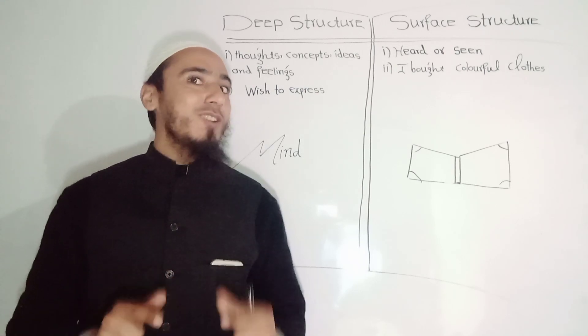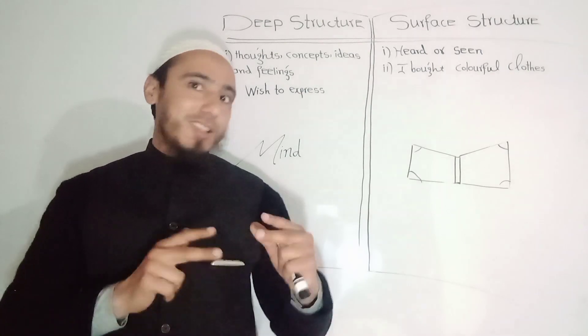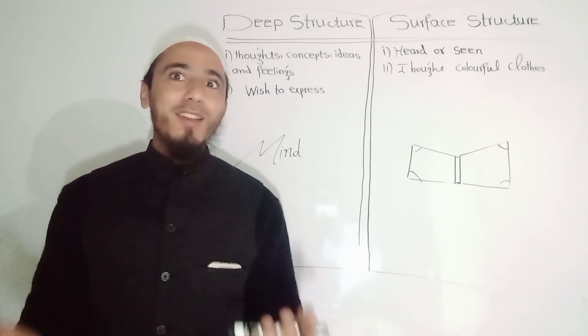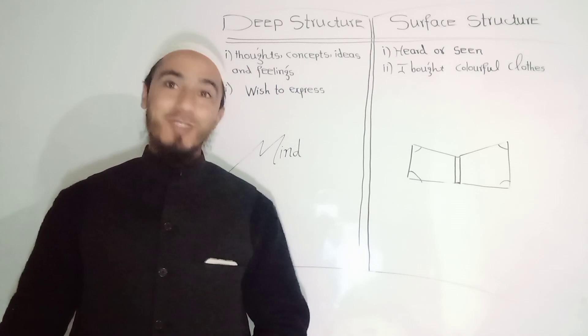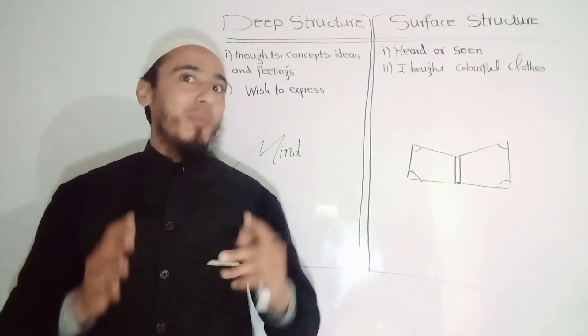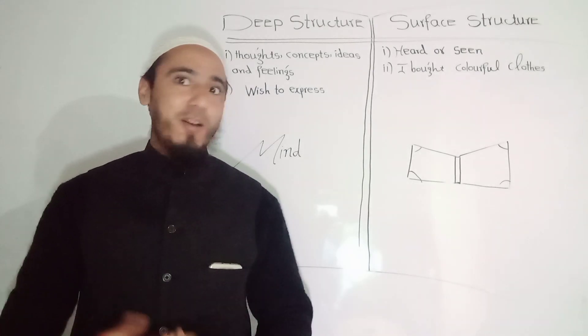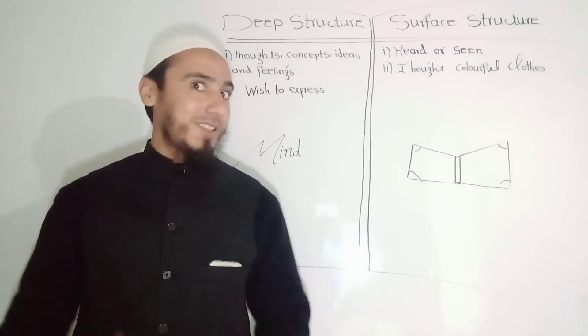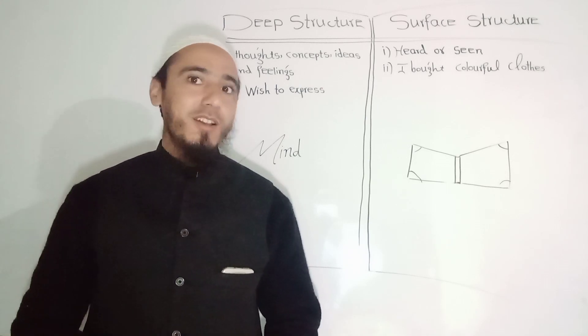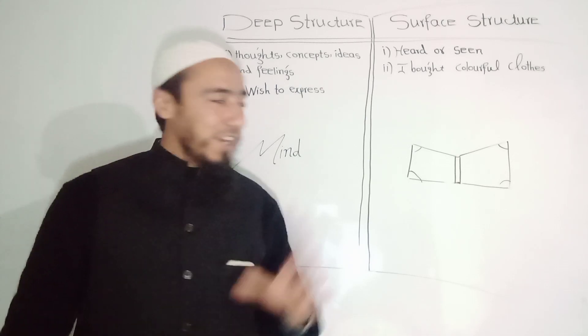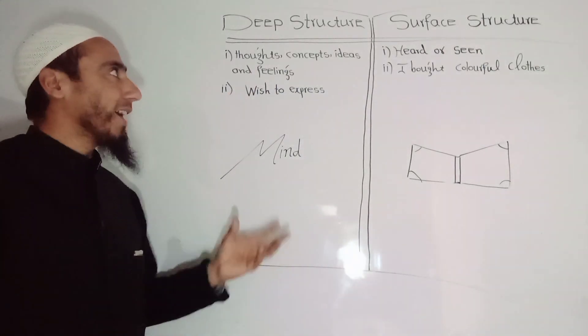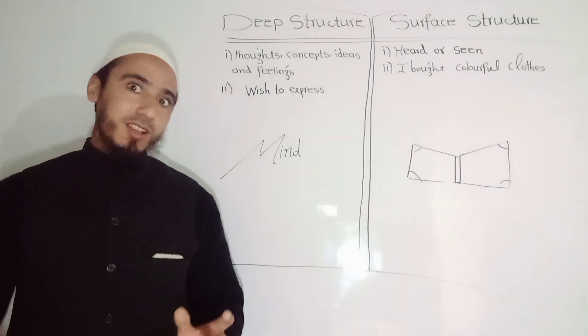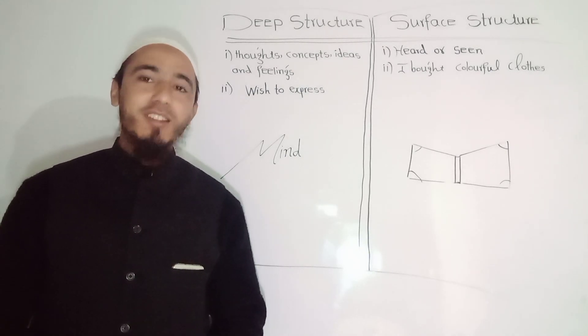And the third one was that there are sentences which superficially are similar and closely related to each other, however they are also different from each other. How they are superficially similar and how they are different - this phenomena is also explained by generative grammar. Today we further explain deep structure and surface structure.